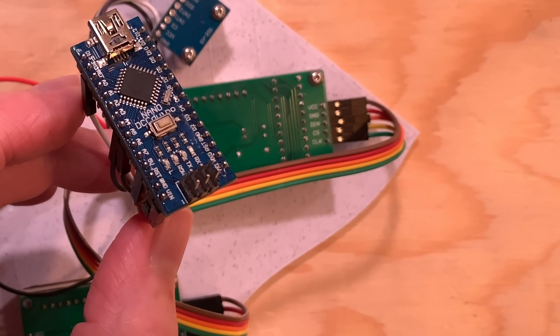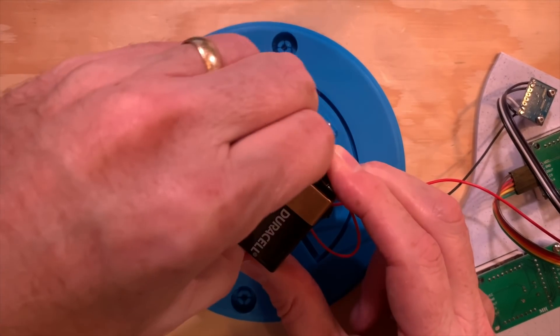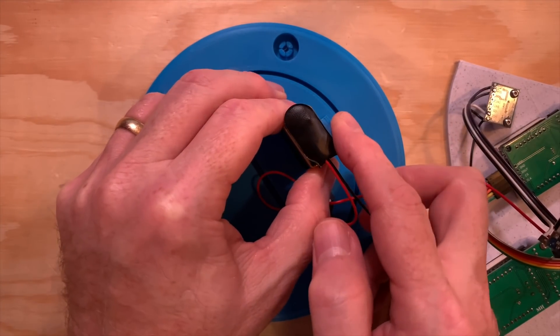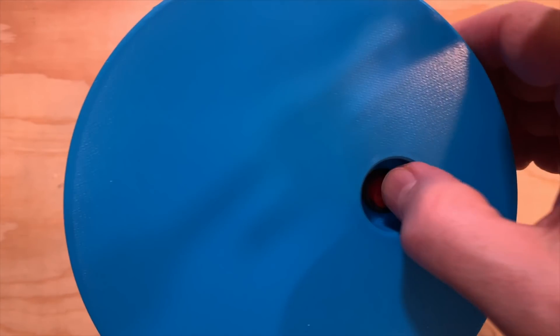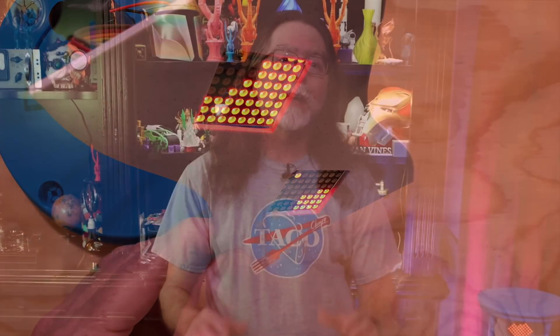Review your connections to make sure you have everything plugged in correctly. And then connect the battery. Turn on the switch, and if everything's been done right, your hourglass should start up.